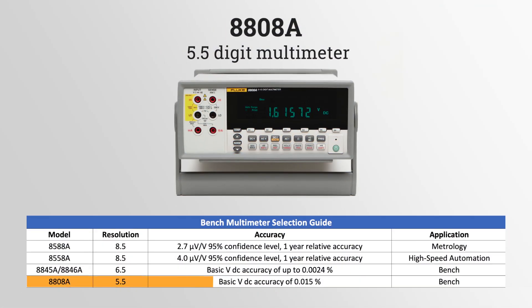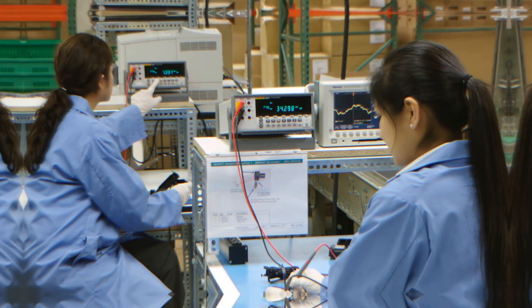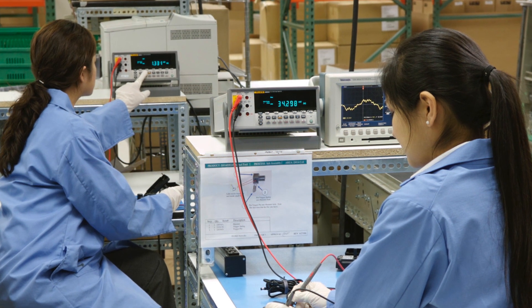The 8808A is a versatile 5.5 digit multimeter for manufacturing, development, and service applications.